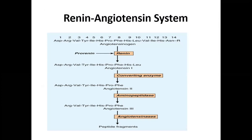Angiotensin 1 is converted to angiotensin 2 by ACE (angiotensin converting enzyme), and angiotensin 2 is converted to angiotensin 3 by aminopeptidase enzyme. Angiotensin 3 is further broken down to peptide fragments. All of angiotensin 1, 2, 3, and renin are essential for maintaining blood pressure. Whenever there is abnormal secretion, it leads to increased blood pressure.